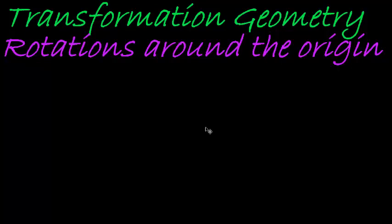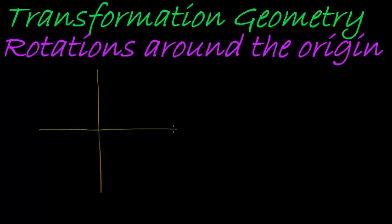Now we get to basic rotations around the origin. Let's jump right into it by plotting a point and rotating it. There's the coordinate system, there's a point — we're going to call that point (x, y) — and let's start with a 90 degree rotation.